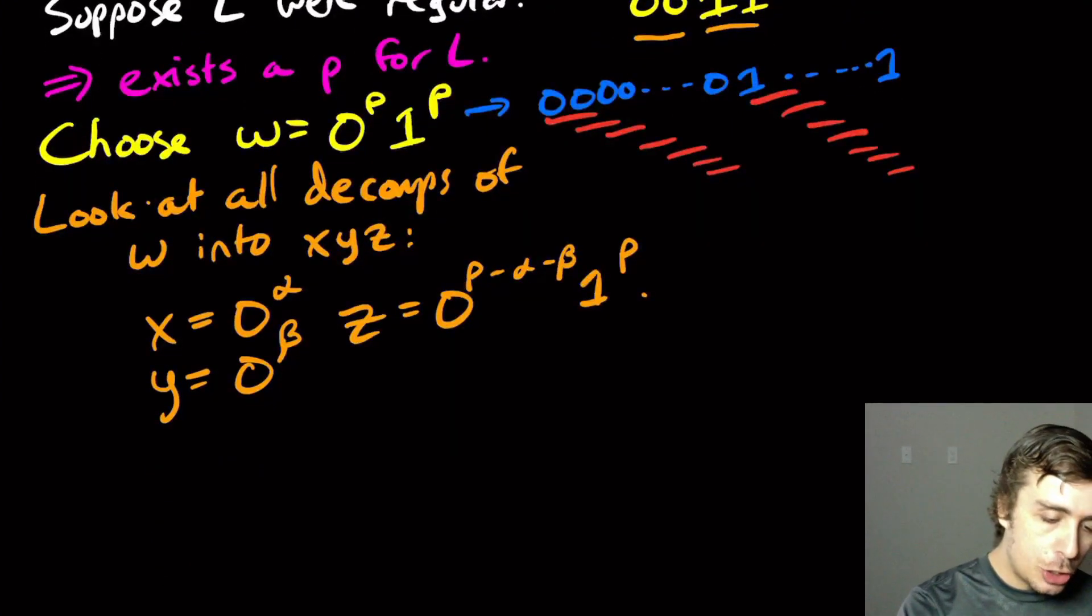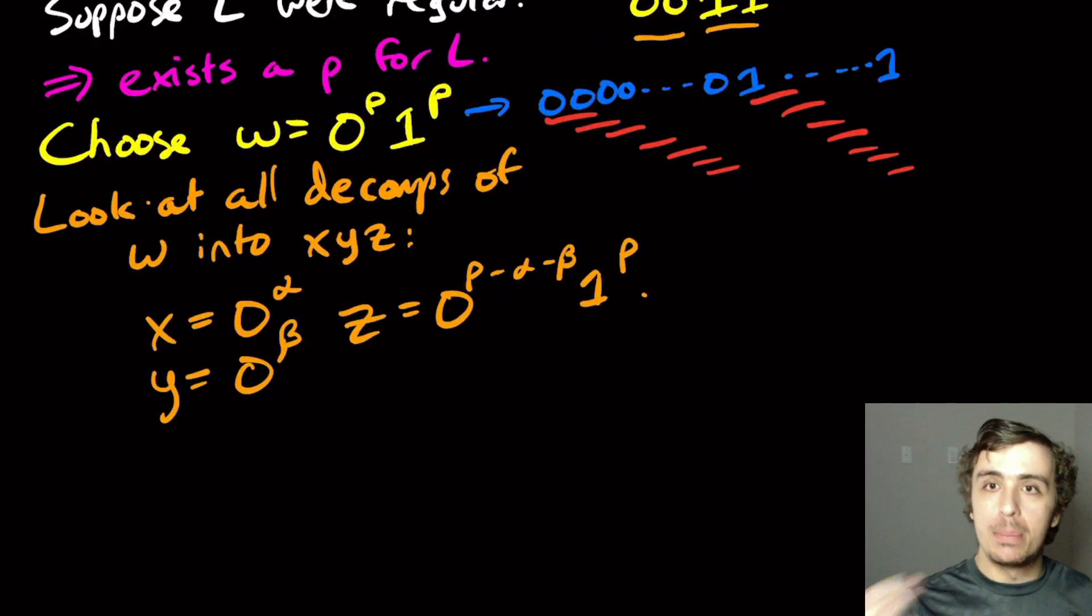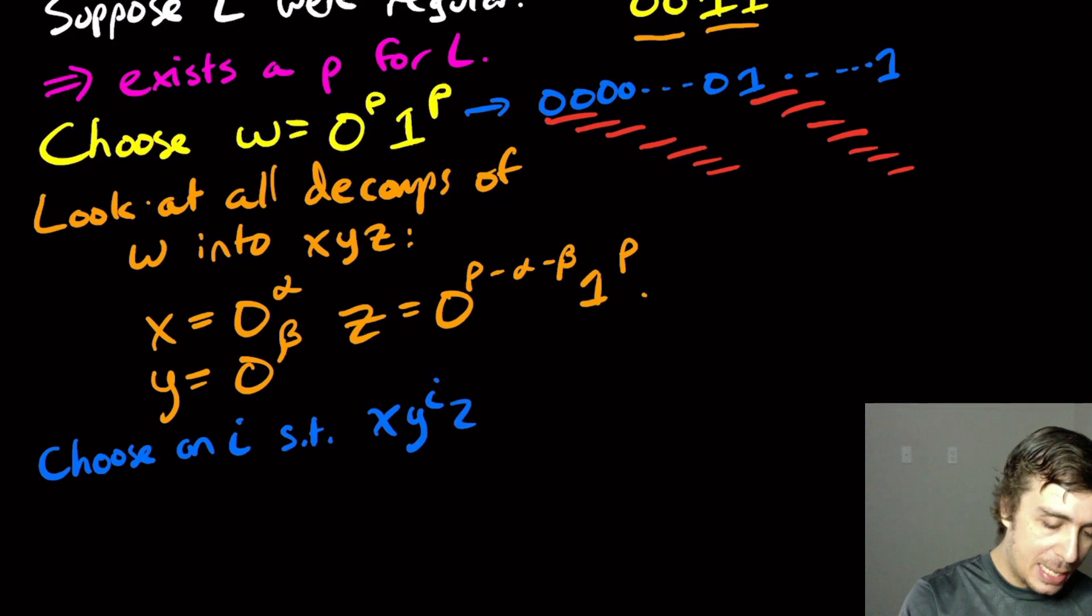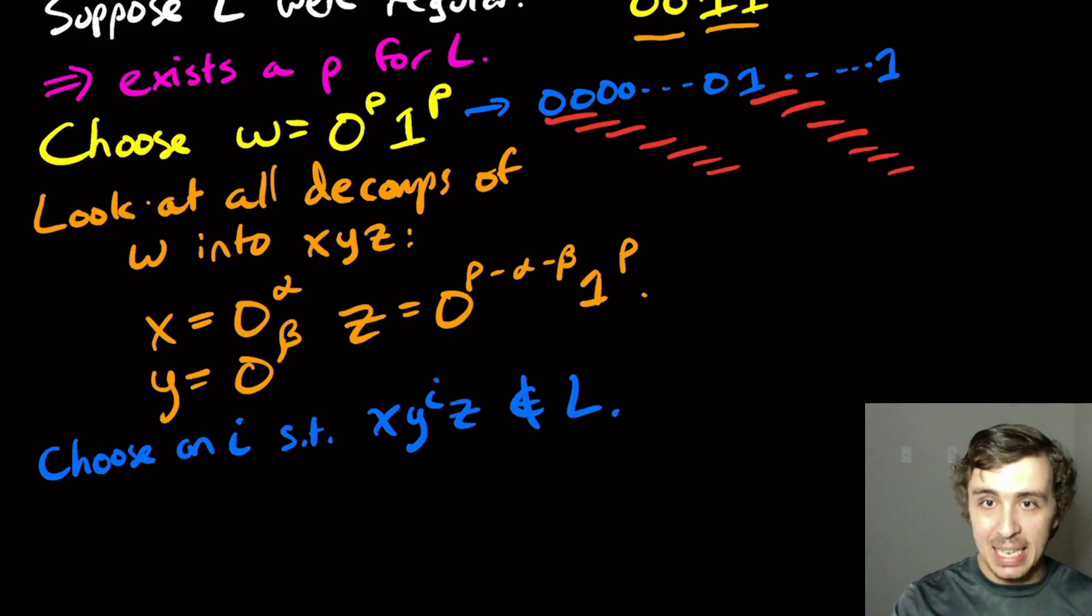Now we need to choose an i for which the number of 00s and 11s is different. More precisely, we need to choose an i such that XY^i Z is not in L.